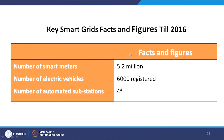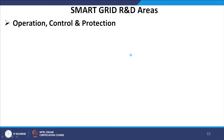Key smart grid facts and figures till 2016: the number of smart meters was 5.2 million, the number of electric vehicles registered was close to 6,000, and there are 4 substations which are completely automated, with many more coming up in this direction.